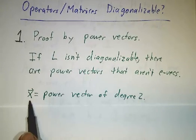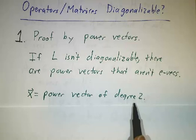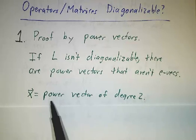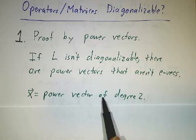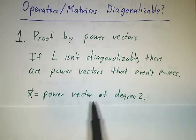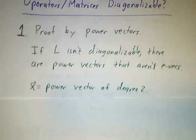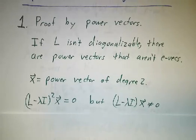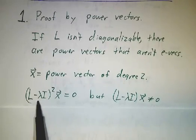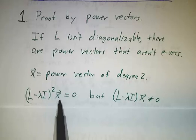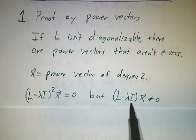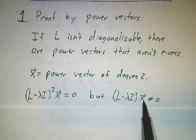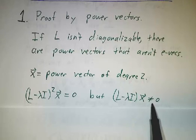Suppose that x is a power vector of degree 2. You always have to have some of those, because if you have a power vector of degree 3, then you hit it with (L minus λ times the identity) and it becomes a power vector of degree 2. So if you have a power vector of degree 2, then (L minus λI)² acting on the vector gives you 0, but (L minus λI) acting on the vector does not give you 0.